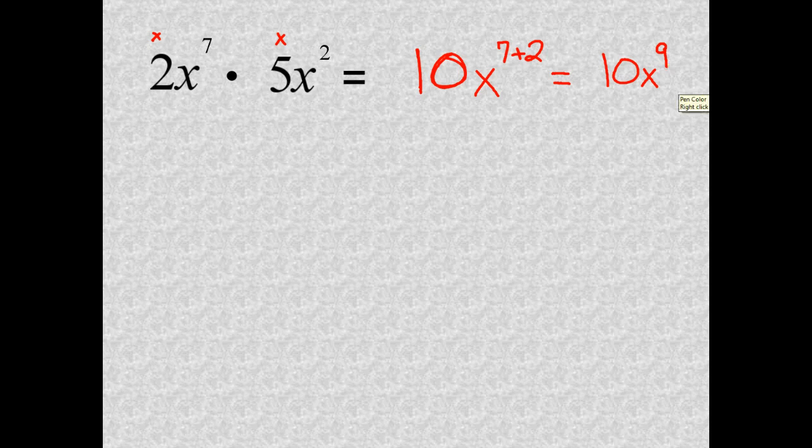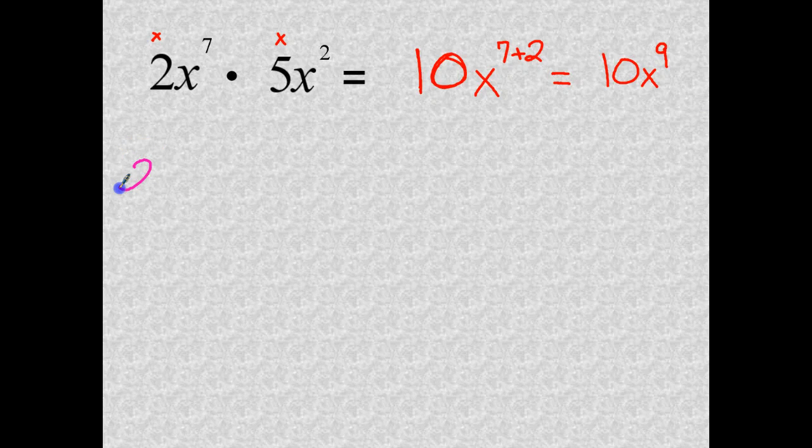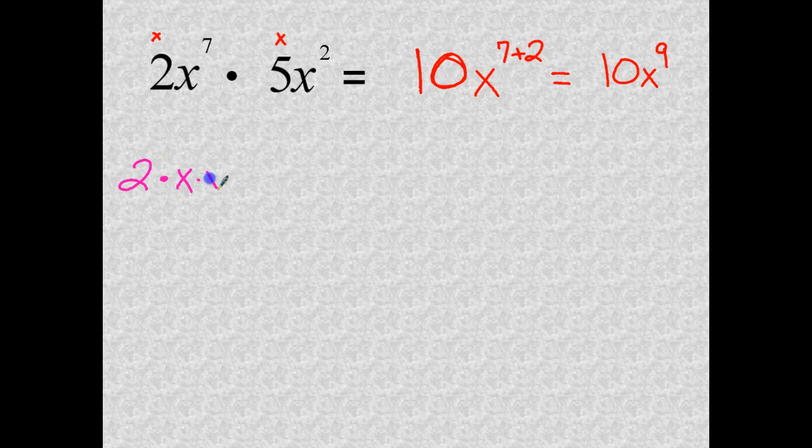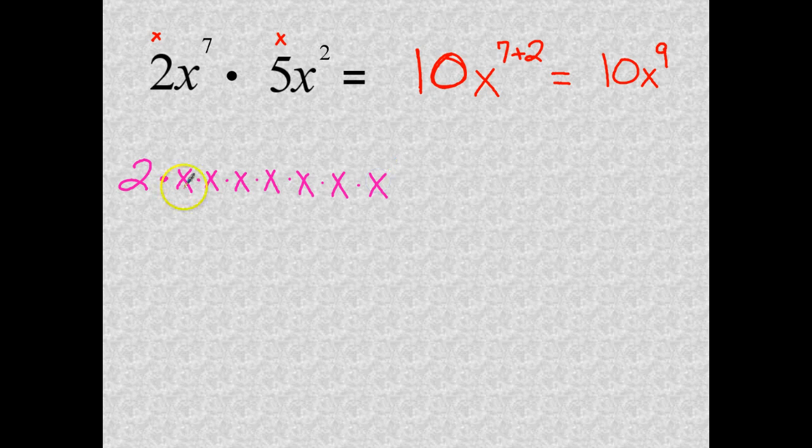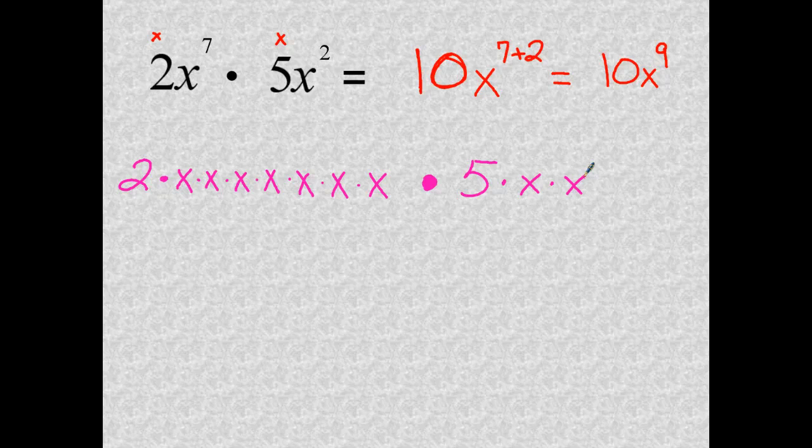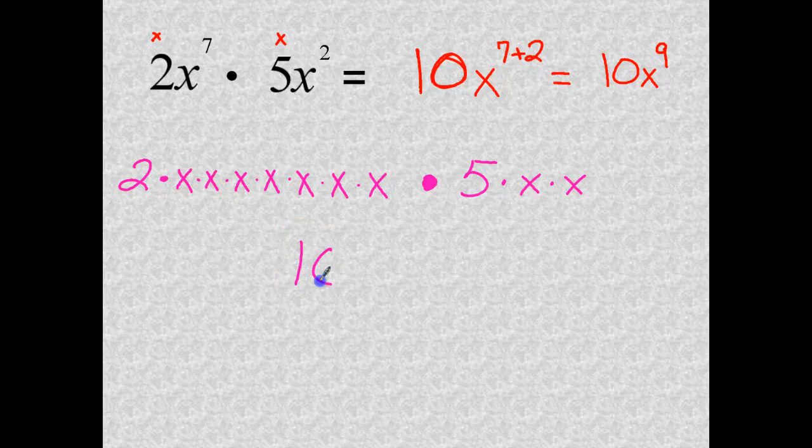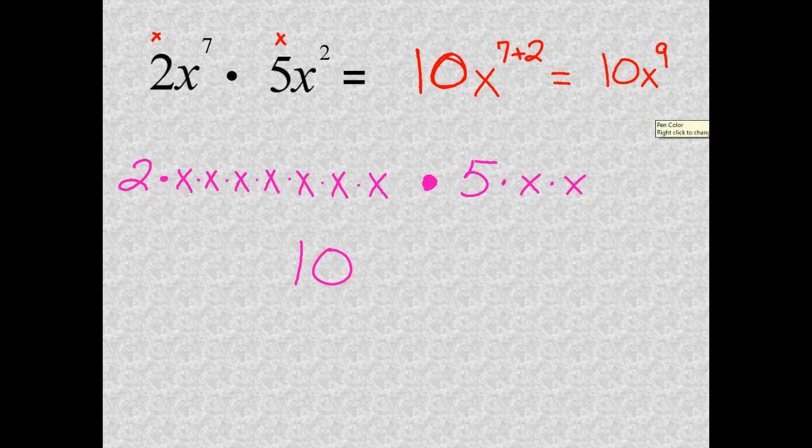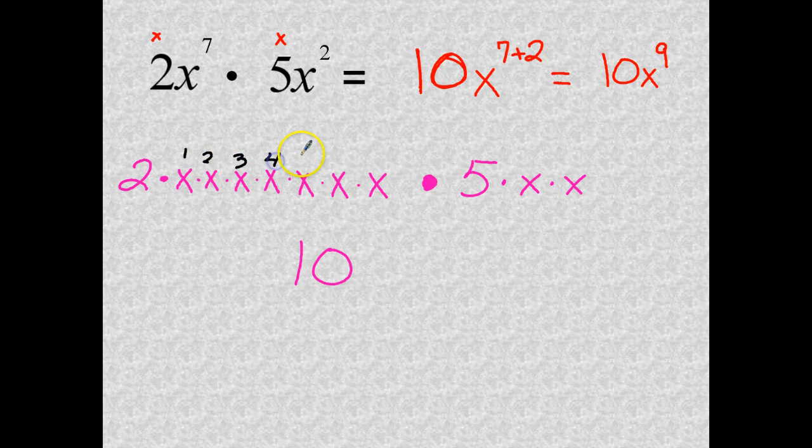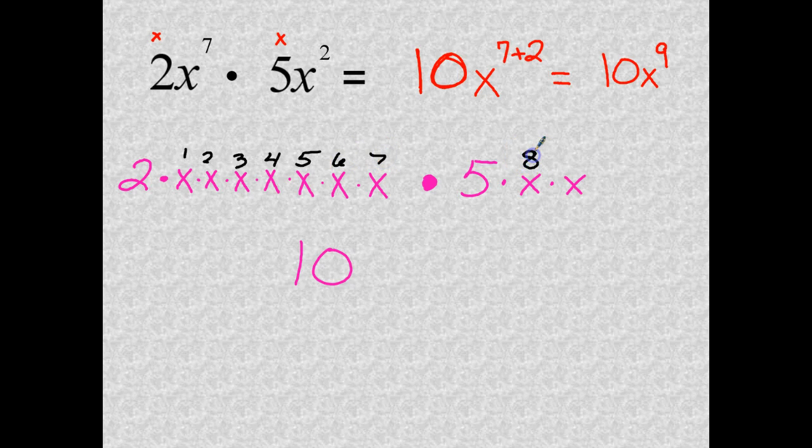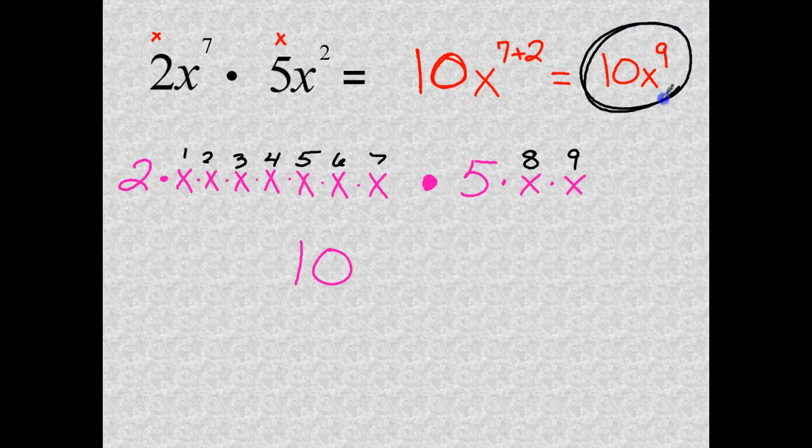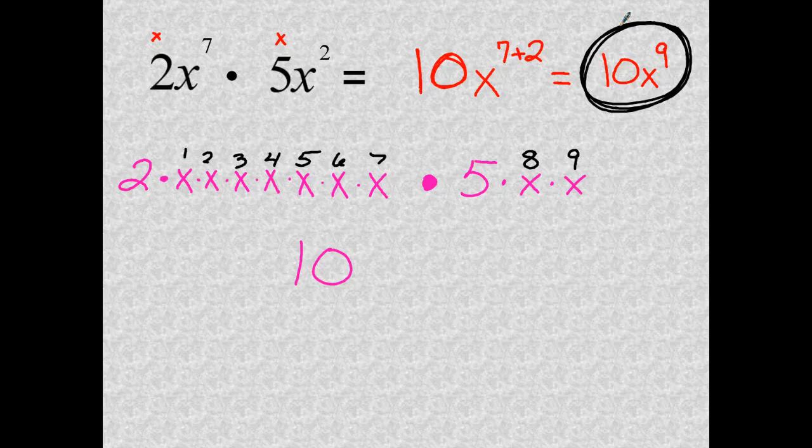And I'm going to write that out. Even though it's kind of tedious to write all this out, I'm going to show you what it actually means. It says two times x, one, two, three, four, five, six, seven. Multiplied by that big product dot five times x and a second x. So written all the way out here, I can see that the two and the five can be multiplied as I did up top. And then let's count how many total x's we have in our product line. One, two, three, four, five, six, seven, eight, nine. And that is where the nine comes from in this final answer of ten x to the ninth power.